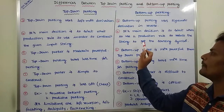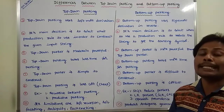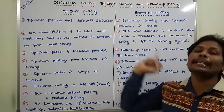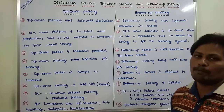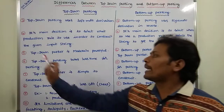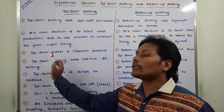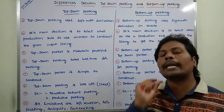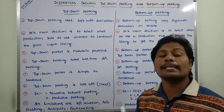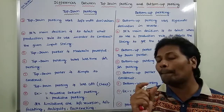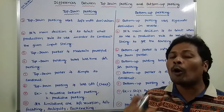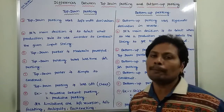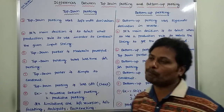This difference can be easily understood from the second difference. Next point: top-down parser is moderately powerful, whereas bottom-up parser is more powerful than top-down parser.